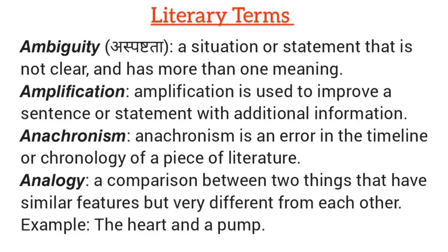What is anachronism? Anachronism is an error in the timeline or chronology of a piece of literature. For example, if a writer mentions something in his work before its invention, then it's called anachronism. What is analogy? Analogy is a comparison between two things that have similar features but are very different from each other. For example, the heart and a pump.